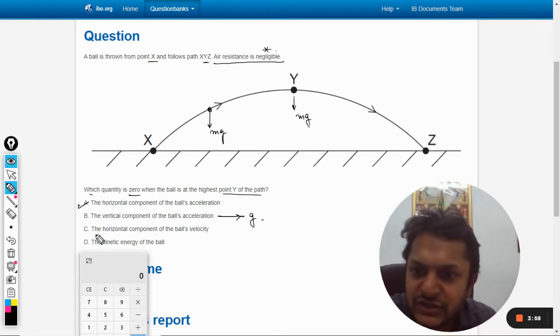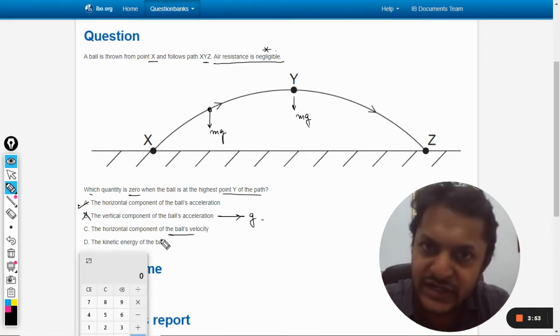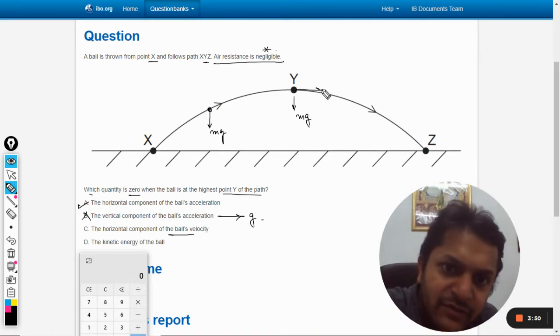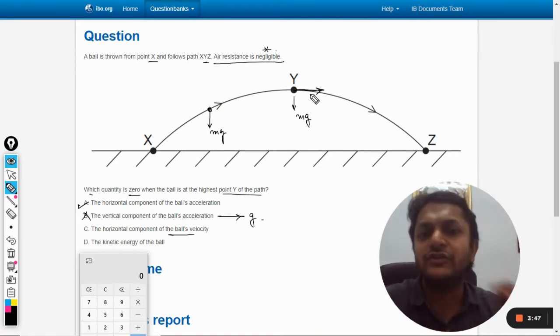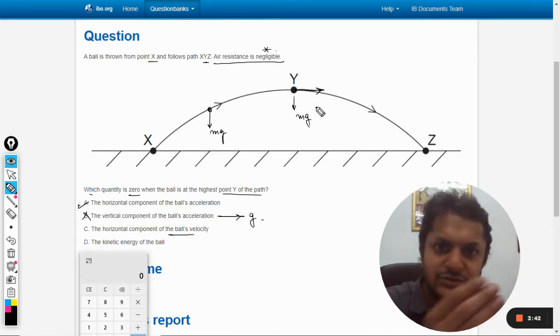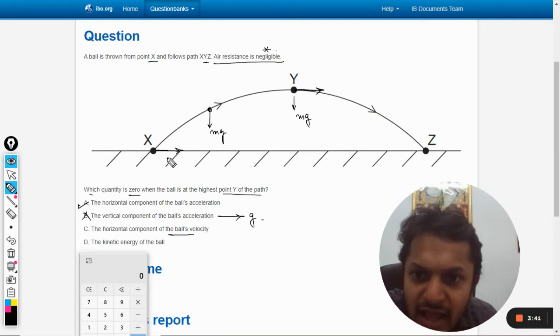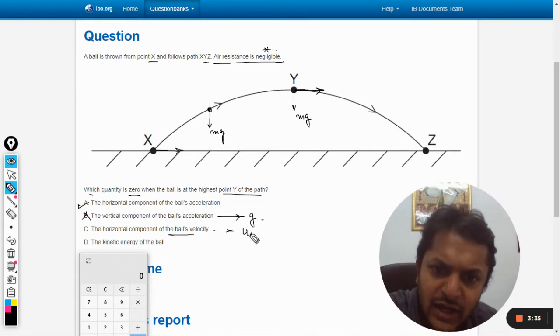The horizontal component of the ball's velocity - well, the horizontal component can never be zero because if the horizontal component is zero, the ball will stop moving ahead. So this is never zero and it is always constant. I'm writing here: the velocity along the x-axis is always constant.